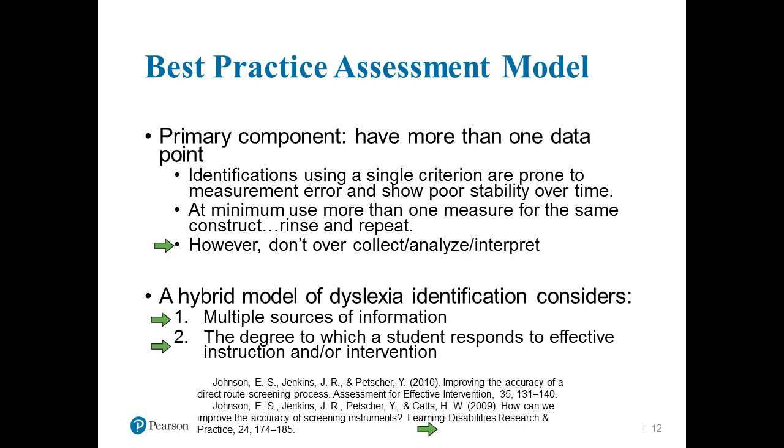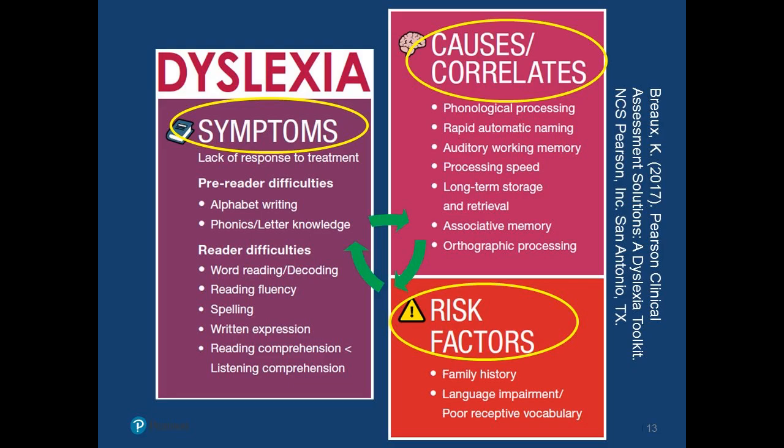Here is a model I want you to start thinking about. When we look at dyslexia, I want you to think in terms of three general areas: symptoms, causes or correlates — what can be the underlying condition or underlying reasons — and risk factors. The arrows go back and forth between each of these because this is an interactive model. We have to think about risk factors being present, and think about the symptoms a child is exhibiting in relationship to why they are occurring.